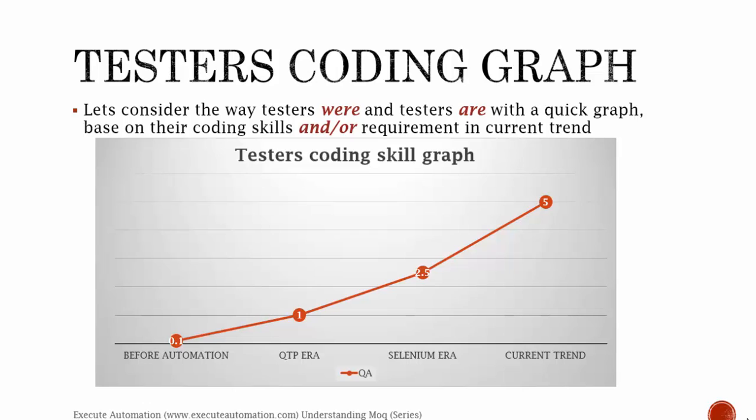When the QTP era started, with record and playback and descriptive programming, testers were expected to write some scripting programming languages, something like VBScript or JavaScript. They didn't do much programming, but they were writing some kind of descriptive programming to achieve the functionality. VBScript is still a powerful programming language.